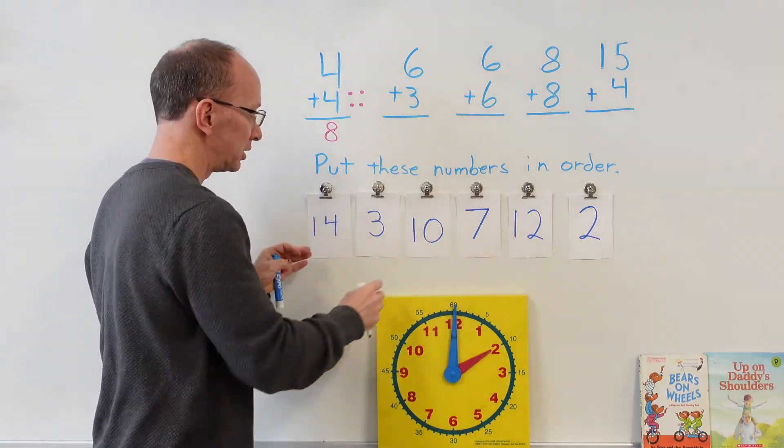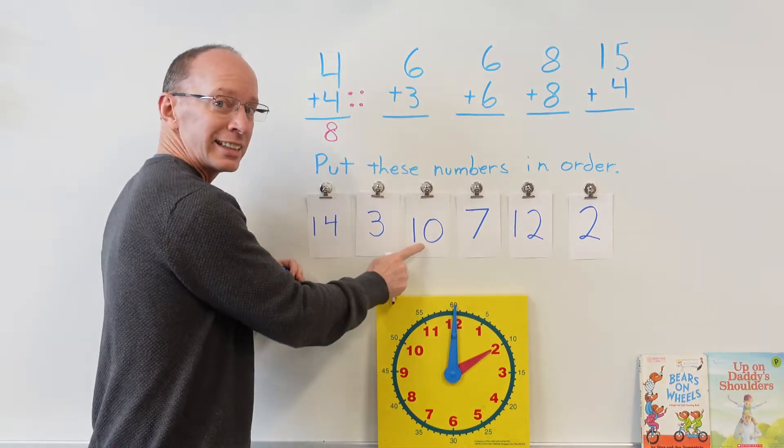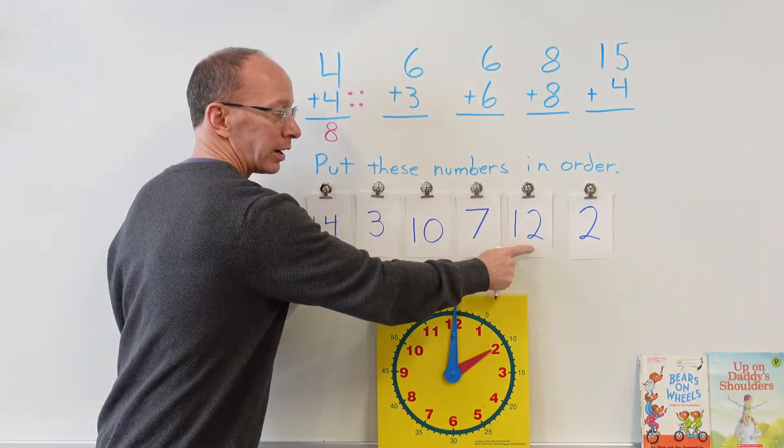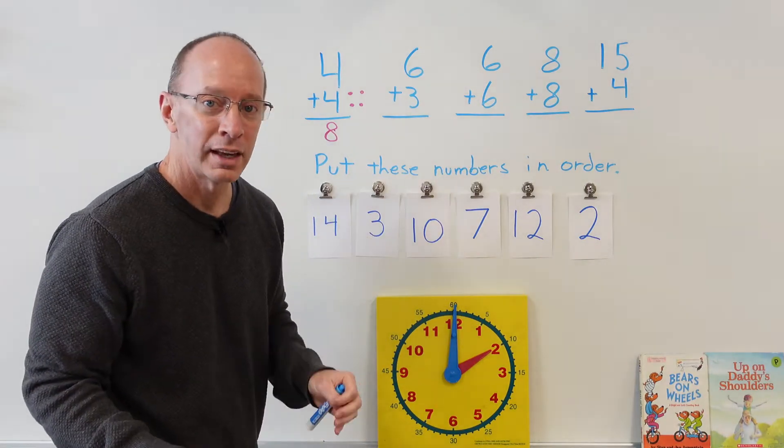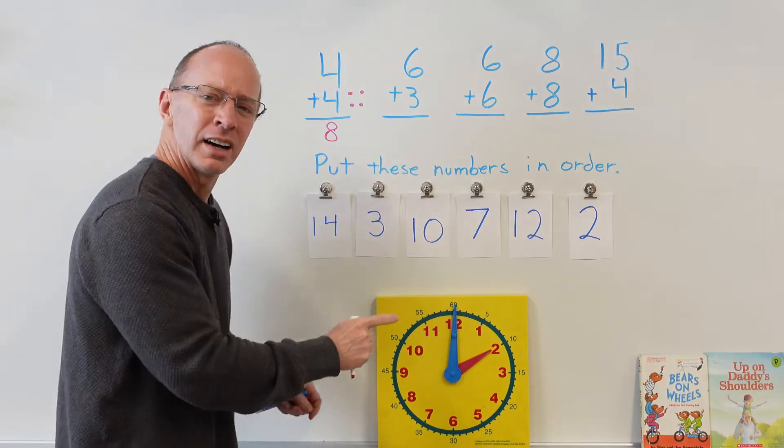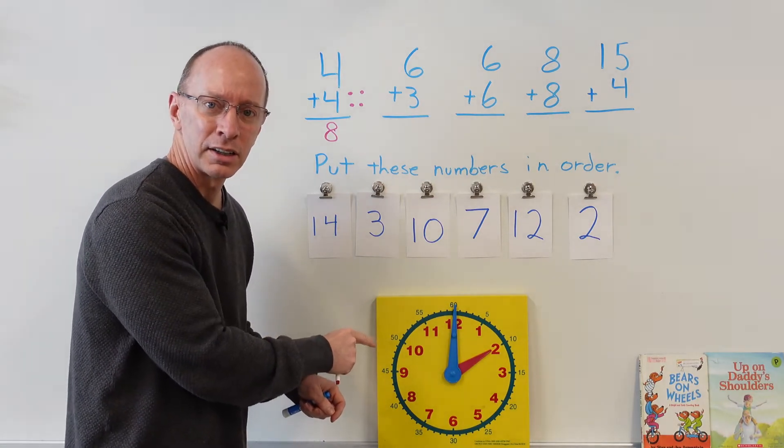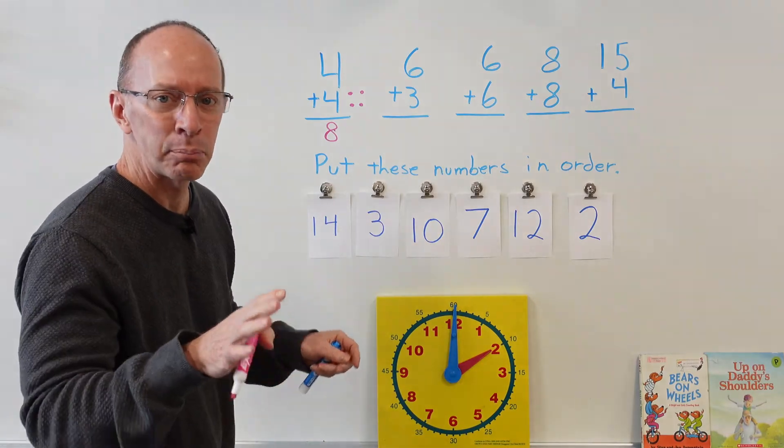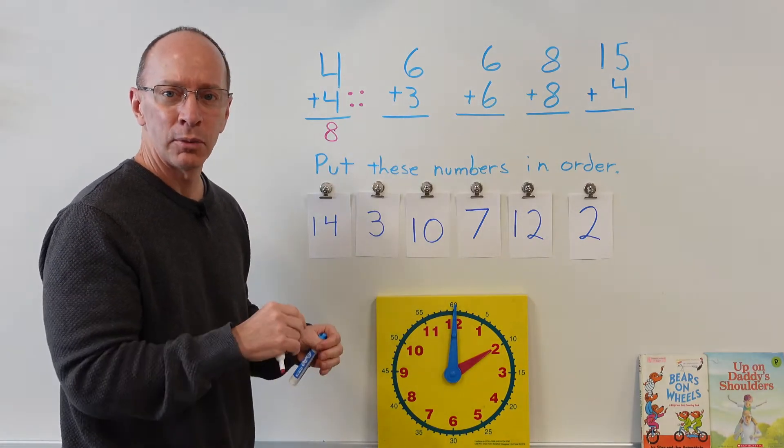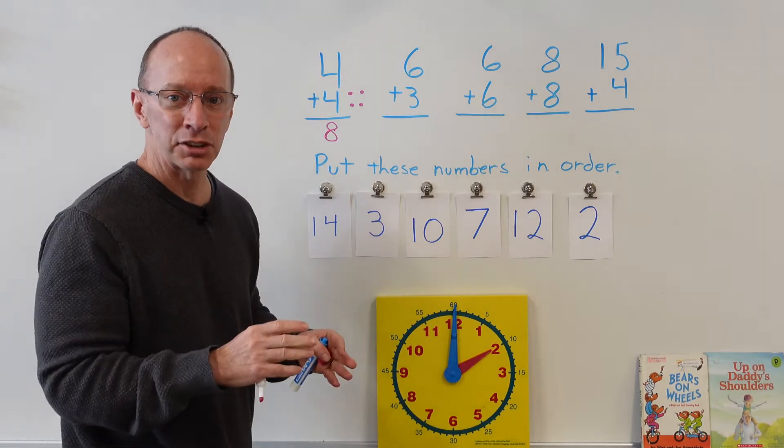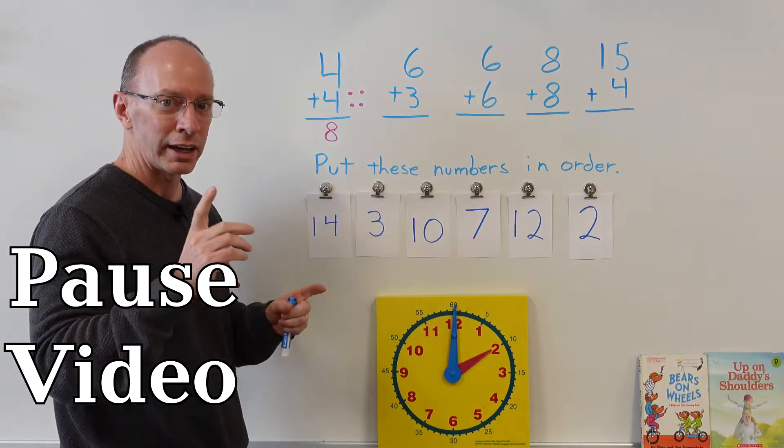So you're going to have to arrange all of these numbers here: you have 14, 3, 10, 7, 12, and 2. And then for our last problem I want you to tell me—write the time—what time that is right there. So right now go ahead and pause the video, and when you're ready to get the answers go ahead and hit play.